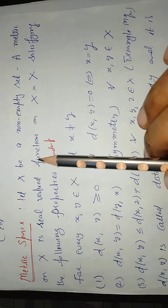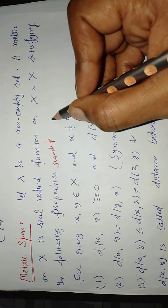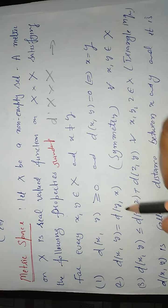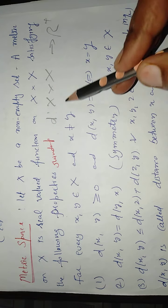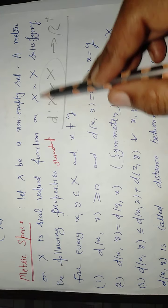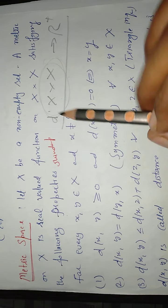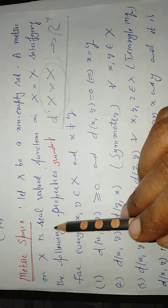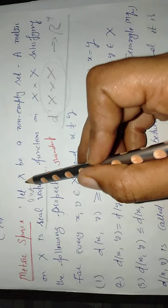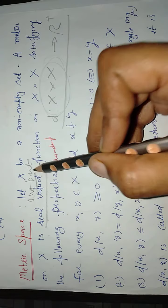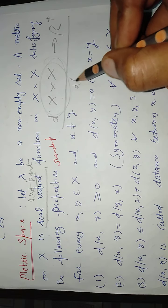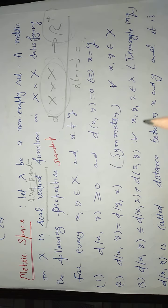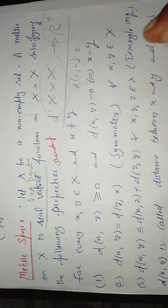A metric on x is a real valued function on x cross x. A metric is some function which will work on x cross x and the outcome will be a positive real number. Metric is a function on the Cartesian product of a set. A metric on x is a real valued function whose output is real. When we are substituting some pairs in this function, the output is a real number, and this function is satisfying the following properties.